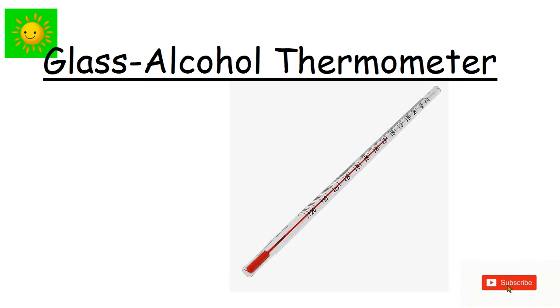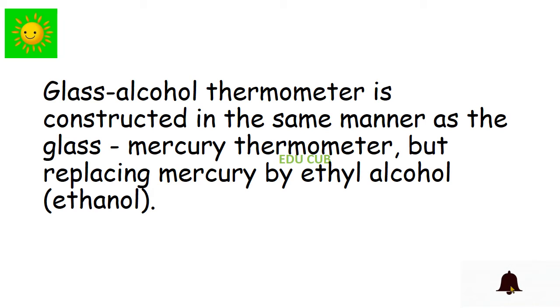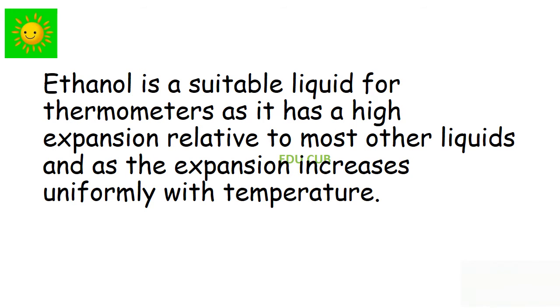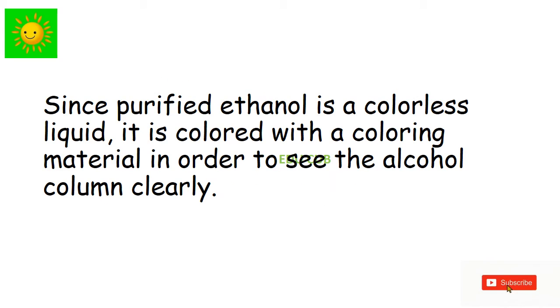Glass alcohol thermometer is constructed in the same manner as the glass mercury thermometer but replacing mercury by ethyl alcohol (ethanol). Since the melting point of ethanol is -115°C, it is suitable for measuring low temperatures much below 0°C. Ethanol is a suitable liquid for thermometers as it has a high expansion relative to most other liquids and its expansion increases uniformly with temperature. Since purified ethanol is a colorless liquid, it is colored with a coloring material in order to see the alcohol column clearly.